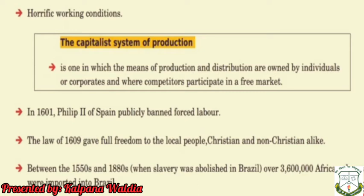In 1601, Philip II of Spain publicly banned forced labor. The law of 1609 gave full freedom to the local people — Christians and non-Christians alike. Between the 1550s and 1880s, when slavery was abolished in Brazil, over three crore six lakh African slaves were imported to Brazil.